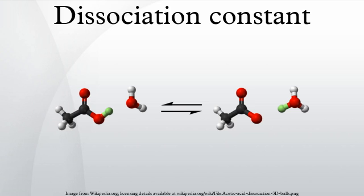For the deprotonation of acids, K is known as Ka, the acid dissociation constant.